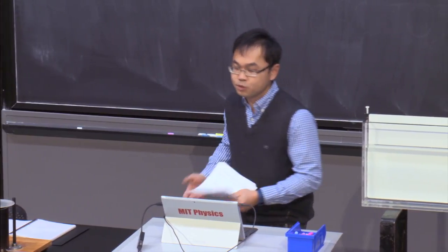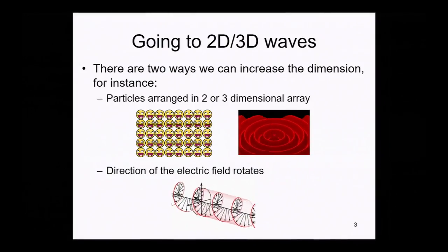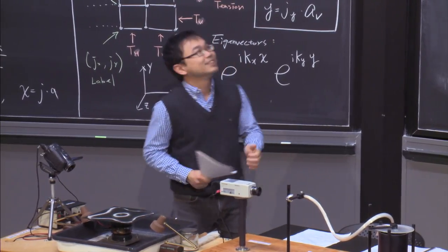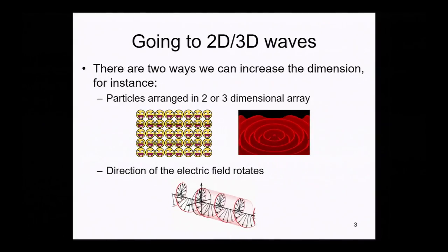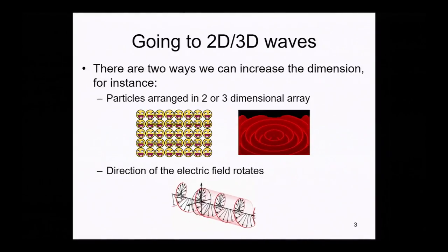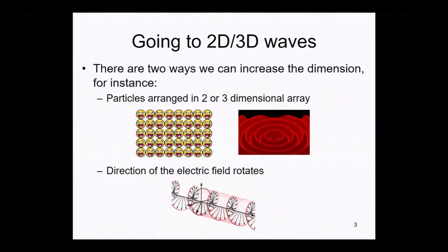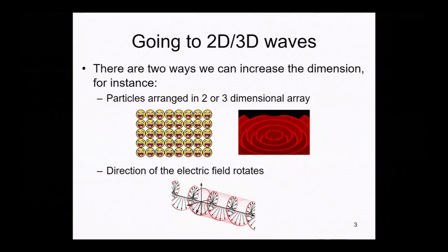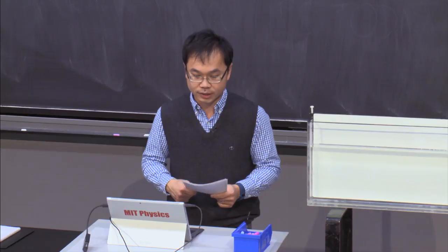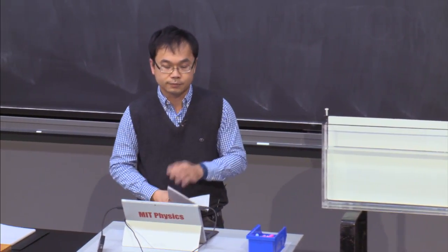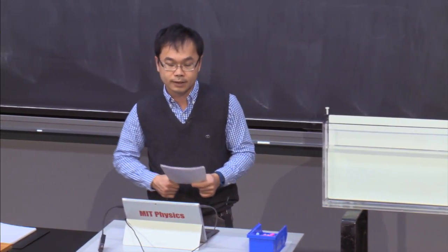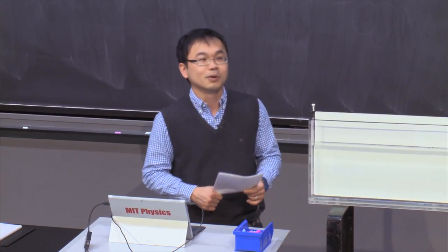We started the discussion of two-dimensional or three-dimensional waves last time. There are two ways to go to higher dimensions. The first way is to increase the number of objects and place them in two-dimensional or three-dimensional space — that is what we discuss today. The other way is to change the direction of the electromagnetic wave as a function of time, which is related to polarization, and we'll cover that on Thursday.